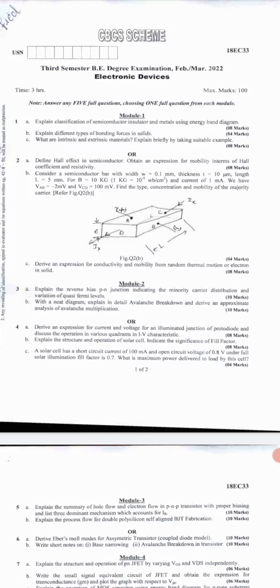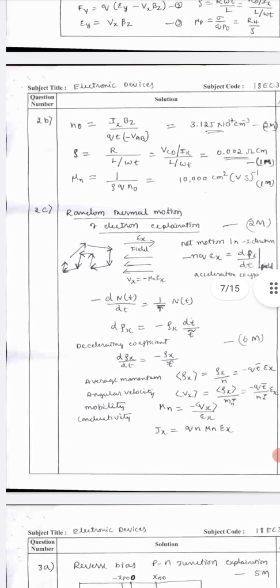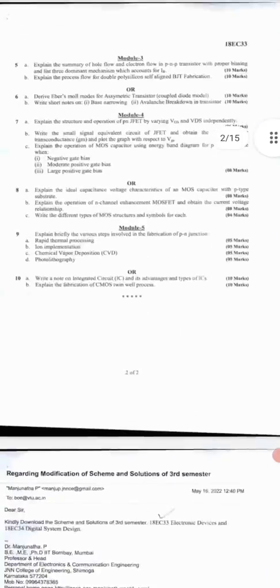You should write the answer like this. For 2B, consider semiconductor wafer, find the type and concentration. For the correct answer, look at here, N0 is equal to this formula you should use. The correct answer is 0.02 ohm centimeter and 10 square centimeter. Like this, you should write for four marks. Two marks for rho, mu_n and N0, one mark each. Go for the next question.